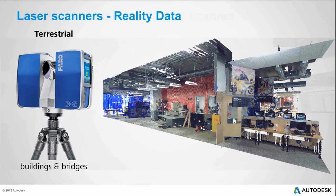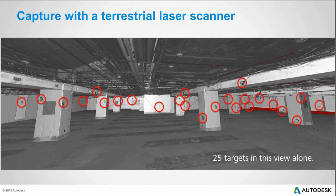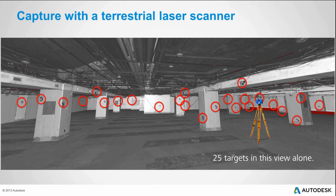Coming back to ReCap Pro and why this matters: traditionally with these scanners, you don't just take one scan. Here's an environment — if I want to scan this, I'm going to have to place the scanner and move it around. To do that, I set up these targets. These targets are anchor points to tie one scan into another. The process is: I come in, drop my scanner, take a scan from this perspective, but I can't see around columns. So I move the scanner from one point to another and take another scan, and repeat the process until the entire area is covered. Setting up these targets is pretty tedious, especially when dealing with very complicated environments.